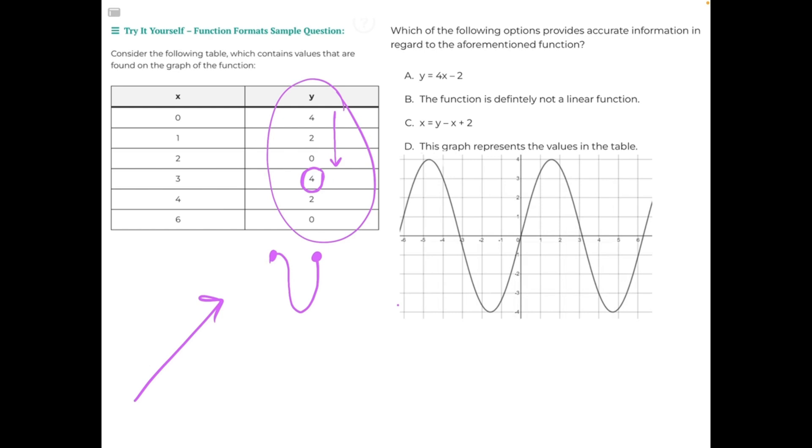So we can take a look at both a and c, and seeing as they're both linear equations, we can eliminate both of those answer choices right away. b could possibly be correct, because it says it is not a linear function, and that's true. However, d might be more correct if the graph perfectly matches the table shown to the left.